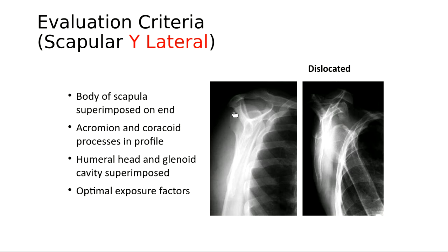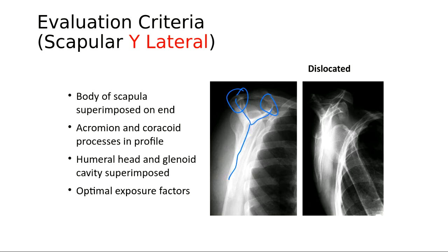Here's the Y: the top of the Y and the body of the Y are all the scapula, and ideally the humeral head sits in the middle of that. You've got the acromion process on one side and the coracoid process on the other, with the body of the scapula forming the base. On a dislocated example, you can outline the Y but the humeral head is completely off-center — when it comes toward the body, that's an anterior dislocation.